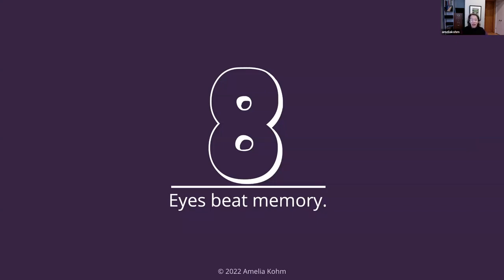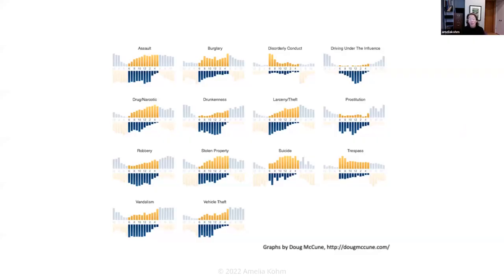Another suggestion from Tamara Munzner is 'eyes beat memory' — it's easier to compare things side by side than to hold one thing in memory and compare it to another. This is the power of small multiples. Here's one from data visualizer Doug McCune: several bar charts placed side by side, looking at various crimes, with time of day on the x-axis and number of crimes on the y-axis. Daytime crimes are the yellow bars and nighttime crimes are the blue bars on the bottom. We can quickly see that driving under the influence and drunkenness occur more at night, while suicide and trespassing occur more during the day.